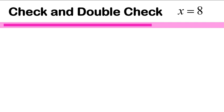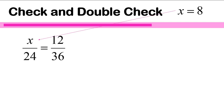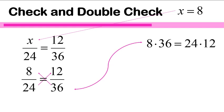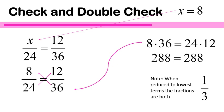x is equal to 8. We're going to substitute that into our equation and check using cross-multiplying: 8 times 36 and 24 times 12. We get 288 on both sides of our equal sign — that tells us we've done the work correctly. Also, if you chose to reduce these down to lowest terms, both of them are equal to 1 third. So that's another way we could have checked our work. That's why I call this our check and our double check.